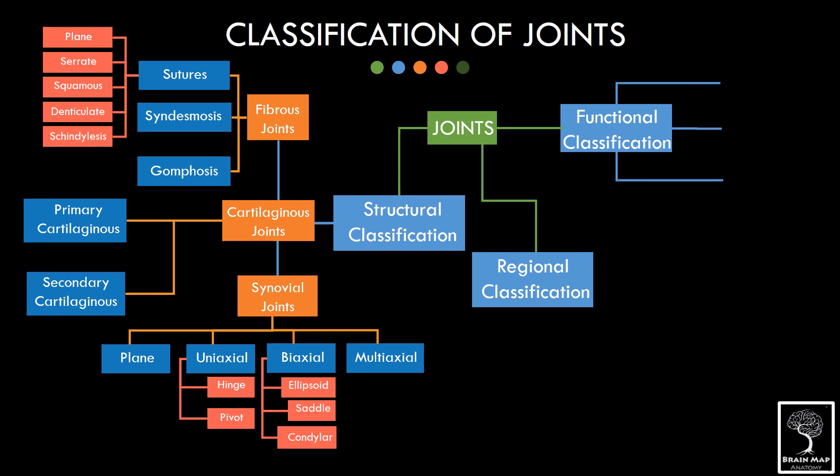Functionally joints are of three types. Synarthrosis are immovable as seen in the skull. Amphiarthrosis are slightly mobile as seen in the cartilaginous joints. Diarthrosis are freely mobile. The synovial variety of joints are highly mobile.